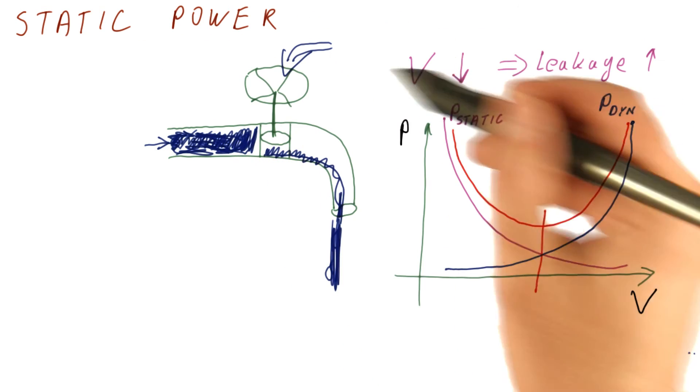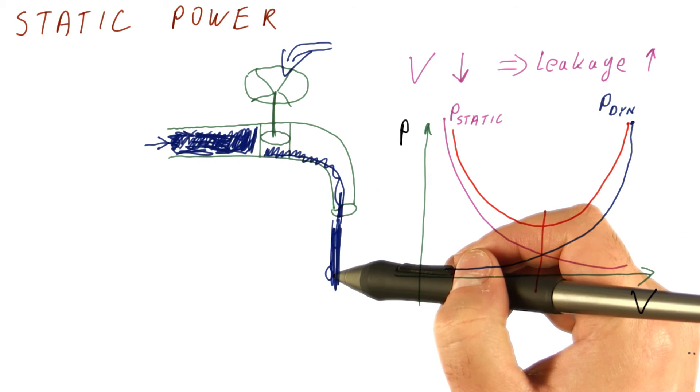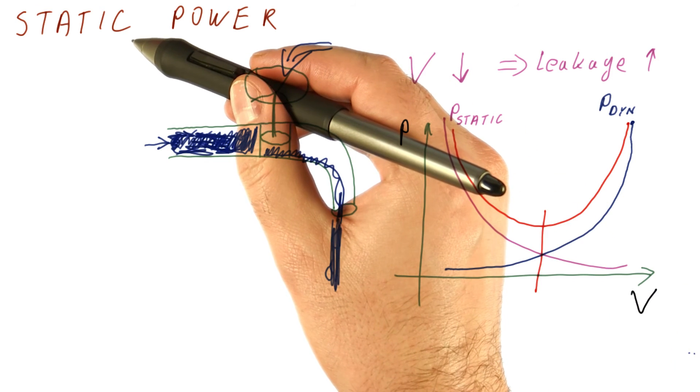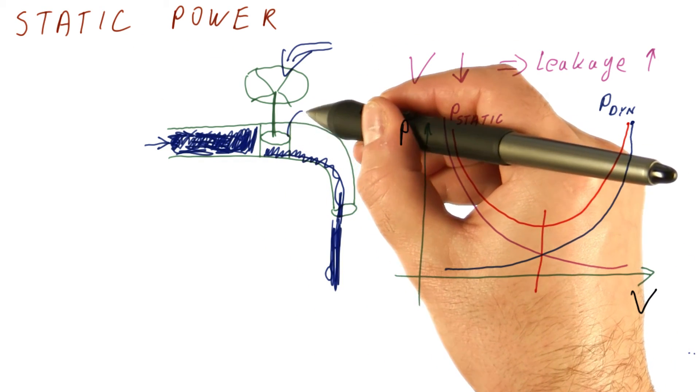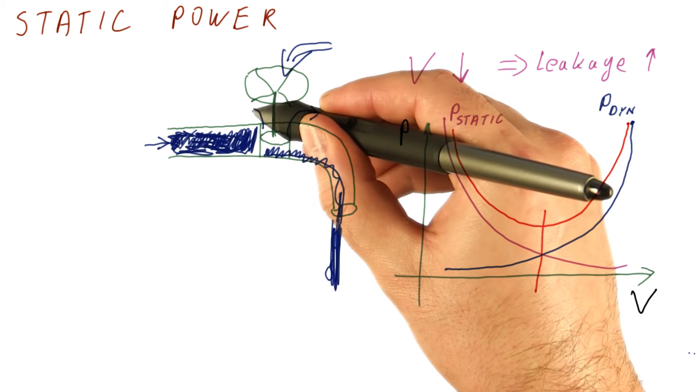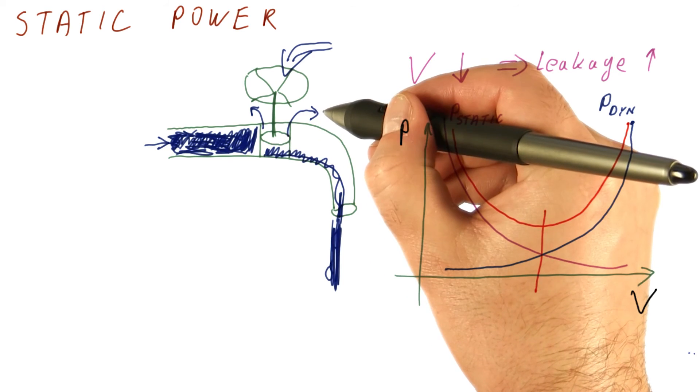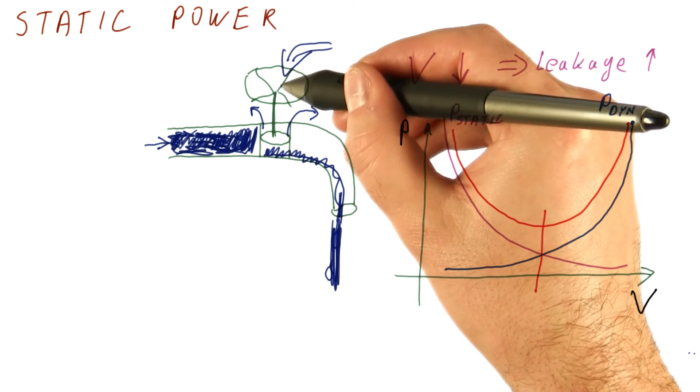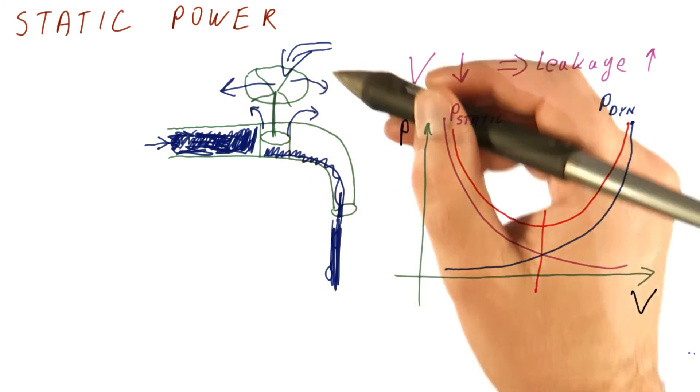Also note that the leakage through the transistor like this is not the only source of leakage that results in static power consumption. Because the transistors are very small, they're acting as faucets whose valves are now leaky too, simply some water is coming through here, some of the water that is building up the pressure is also leaking out, and so on.